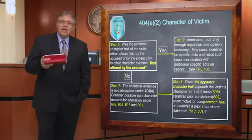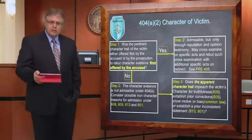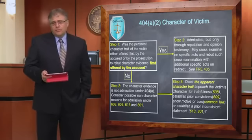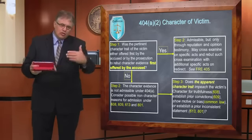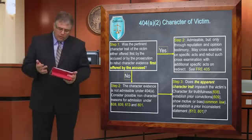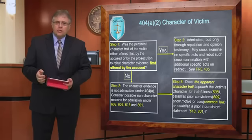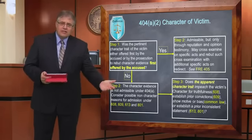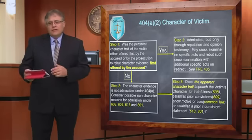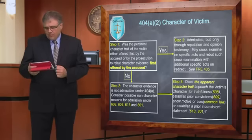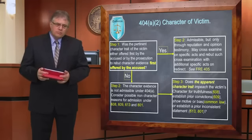What I can do is look at other theories of impeachment available for any witness and try to get that character testimony into an appropriate frame. Examples include character for truthfulness under Rule 608, prior convictions under 609, prior inconsistent statements under 613, common law bias or motive to lie, and impeachment on a non-collateral matter.